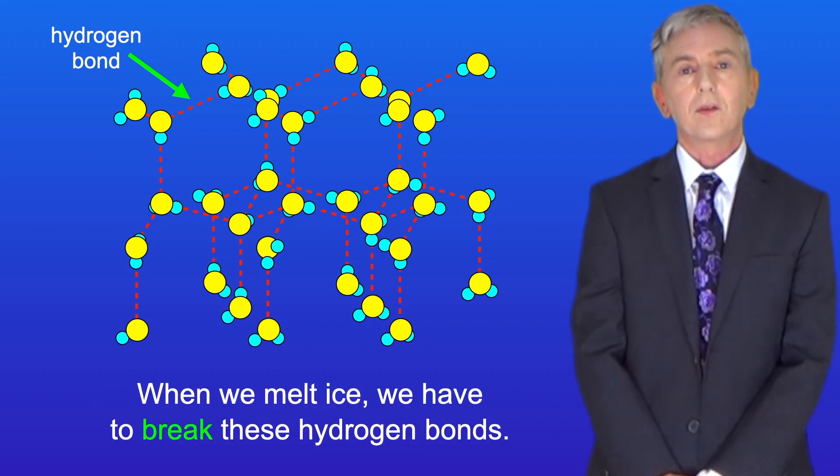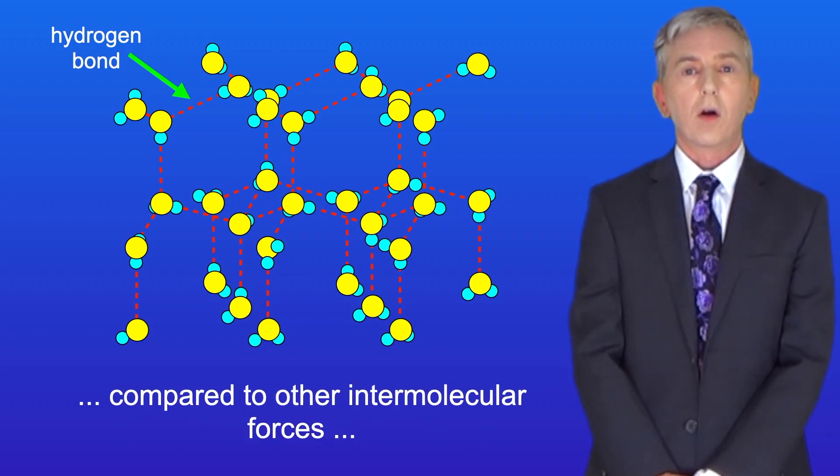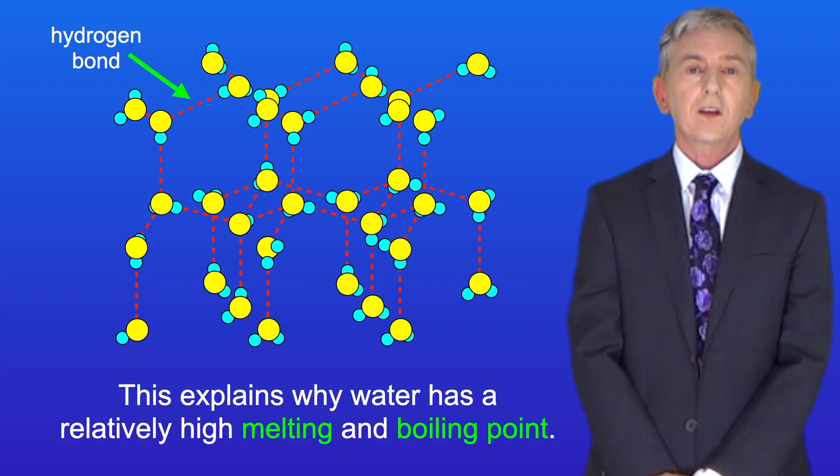When we melt ice we've got to break these hydrogen bonds and because hydrogen bonds are relatively strong compared to other intermolecular forces it takes quite a lot of energy to break hydrogen bonds. This explains why water has a relatively high melting and boiling point.